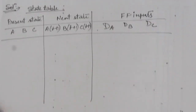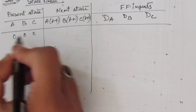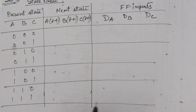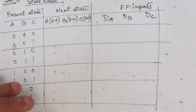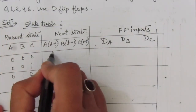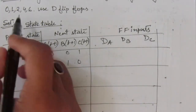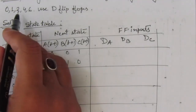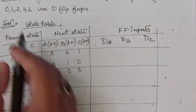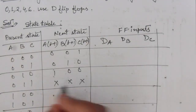Now let us write down the present state. For 3 bits, we will have 8 combinations starting from 0 to 7. For finding out the next states, we have to see this sequence. Whenever we have 0, it will go to 1 — so next state is 0,0,1. When we have 1, it will go to 2 — that means next state is 0,1,0. Whenever we have 2, it will go to 4 — that means 1,0,0. Whenever we have 3, it is not in this sequence, so it is a don't care condition.